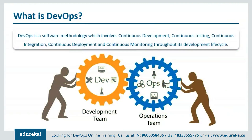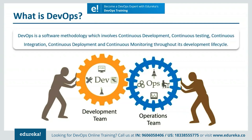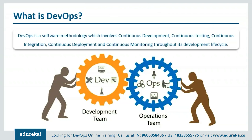Let me first brief you on DevOps. DevOps is basically a software development strategy which bridges the gap between the dev side and the ops side of the company. In simple words, DevOps is a software methodology which involves all the steps from continuous development, continuous testing, continuous integration, continuous deployment, and continuous monitoring throughout its development lifecycle. It involves all the steps from building, testing, and compiling the code, and then finally putting it on the production servers.